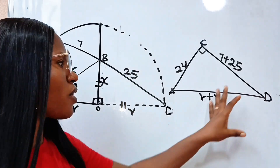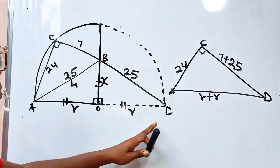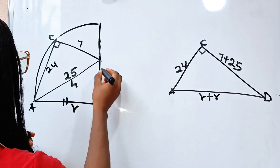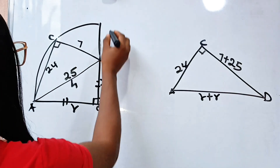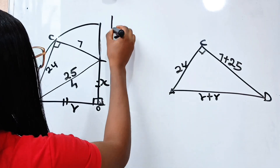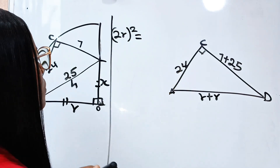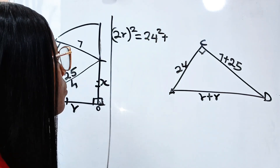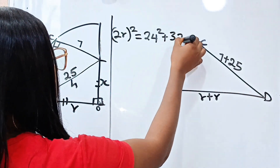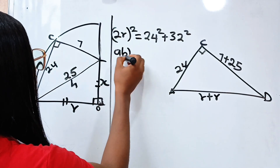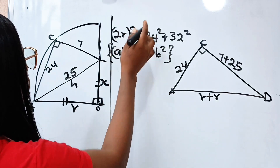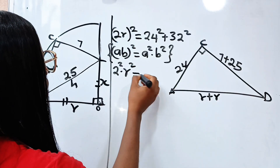Using the Pythagorean theorem on triangle ACD, 2R is the hypotenuse, so (2R)² equals 24² plus 32². That gives us 4R² equals 24 squared plus 32 squared.